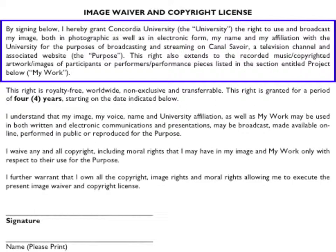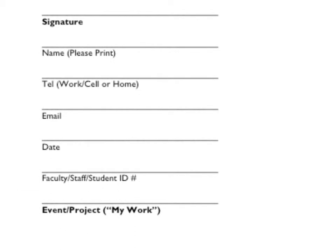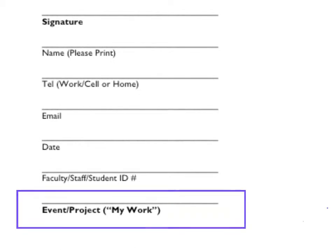This is to say that it will be aired on TV with reruns throughout the season, and it's going to be streamed at the same time it's on TV. Canal Savoir is a television channel and associated website — a cable TV station that also streams their shows online. This right also extends to recorded music, copyrighted artwork, images of participants or performers, and performance pieces listed in the project section — that is the copyright part. We ask that you list all copyrighted works you've used as part of your project.